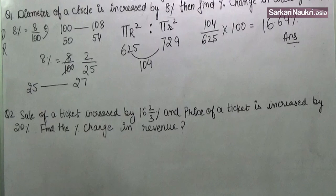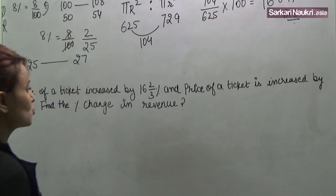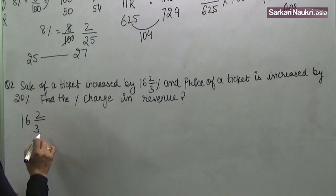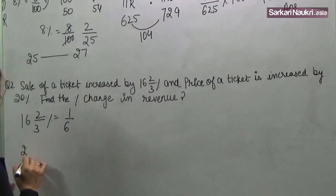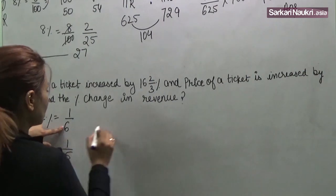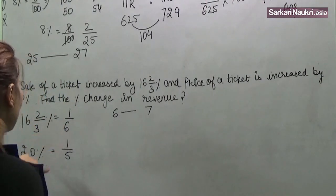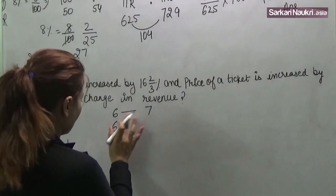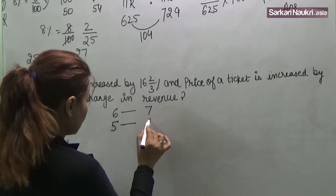Next question: sale of a ticket increased by 16⅔% and price of a ticket is increased by 20%. This will be 1 by 6 and 20% will be 1 by 5. So this is increased 1 over 6 to 6, 7.